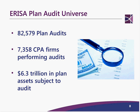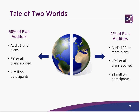Slide nine tells a tale of two worlds. On the left, 50% of plan auditors only do one or two plans — just 6% of all plans audited and only about 2 million participants. On the other side, just 1% of all plan auditors are doing more than 100 plans, covering a few percent of all plans but 91 million participants. The DOL is concerned about those 'dabblers' on the left — do they really have the necessary training to do good audits?